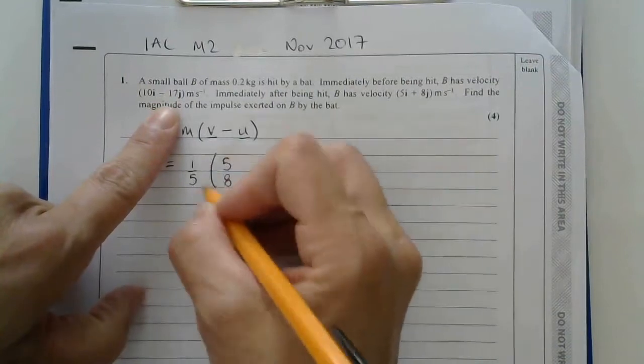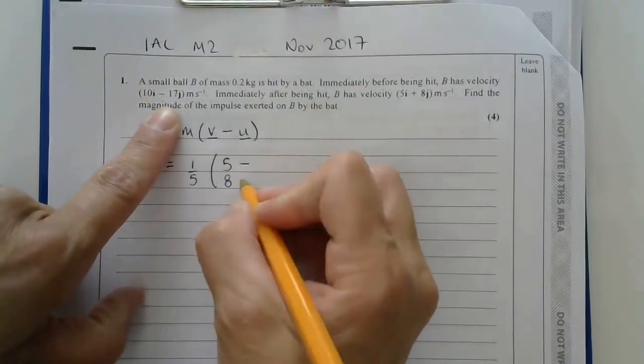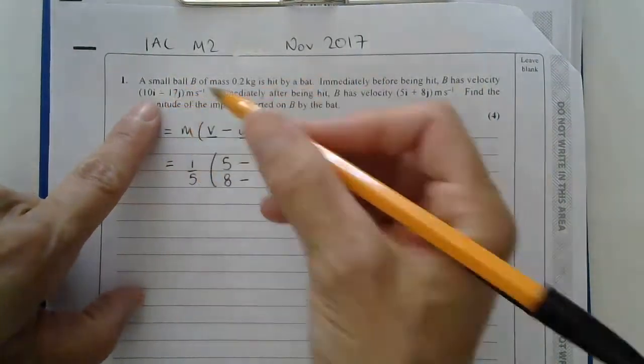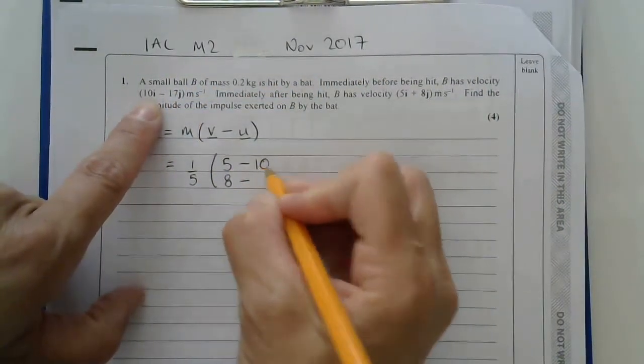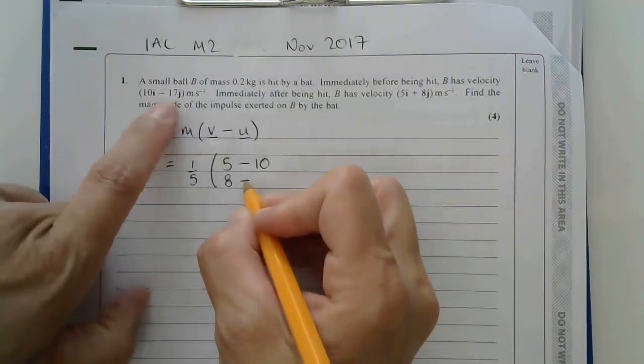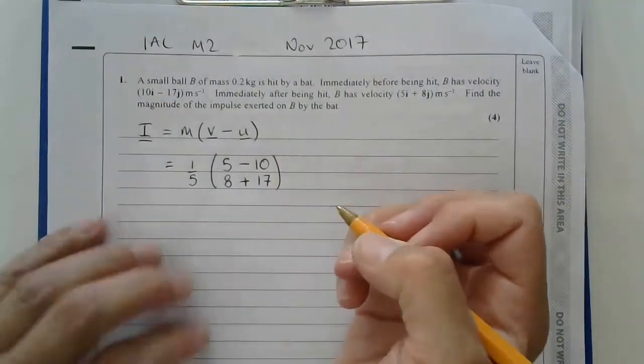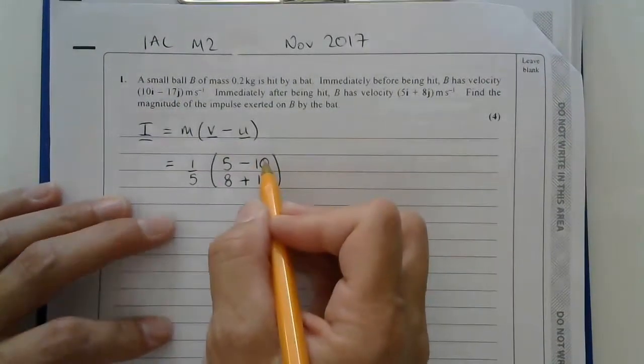Now rather than writing two separate vectors and doing like a zillion brackets, I'm just going to write this minus. And on the top I'll do 10, and on the bottom I've got negative 17. But if I take away negative 17, then I'm going to add 17.